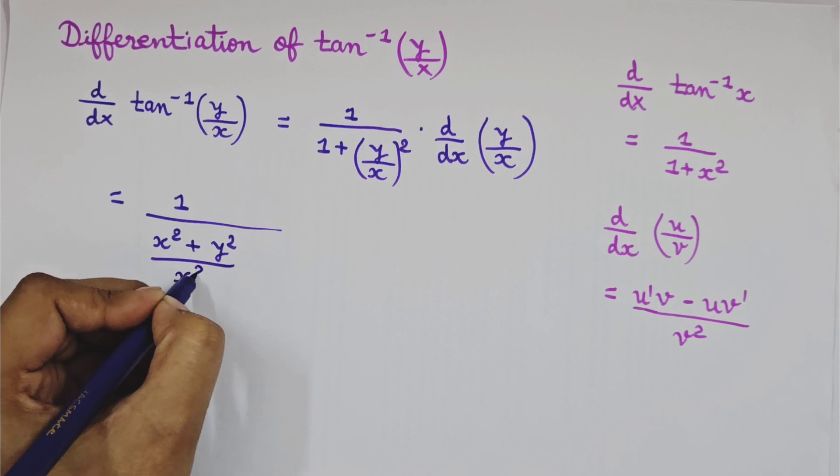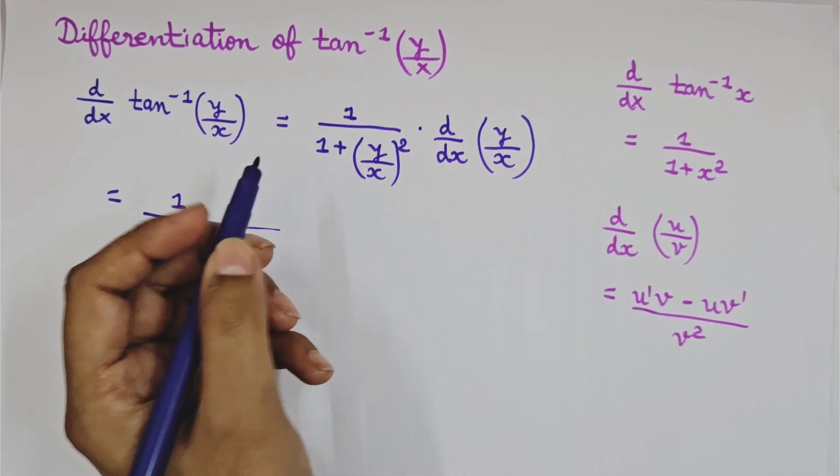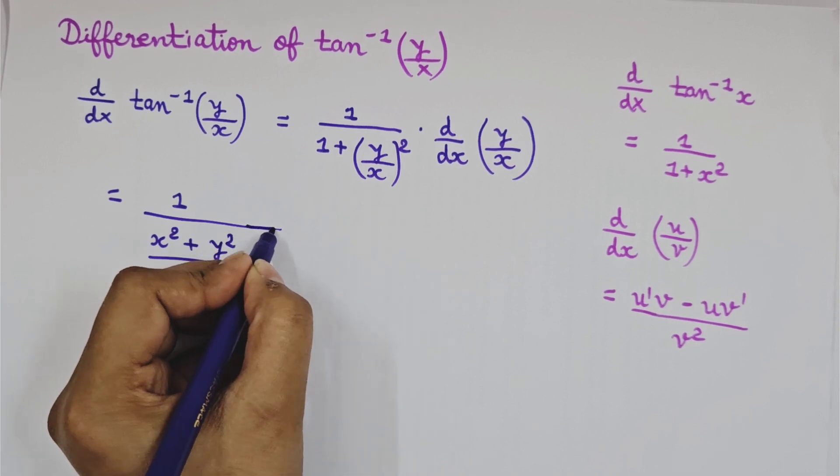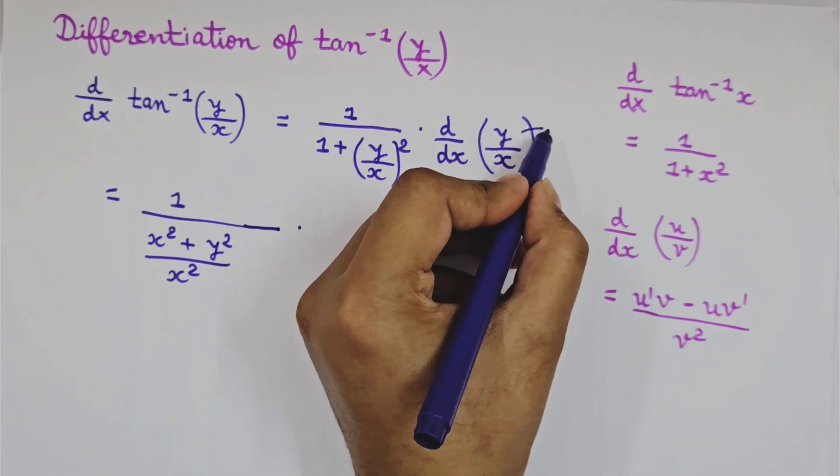Now here will be 1 plus y by x whole square, 1 plus y square by x square, x square LCM. So it will be 1 upon x square plus y square whole divided by x square.